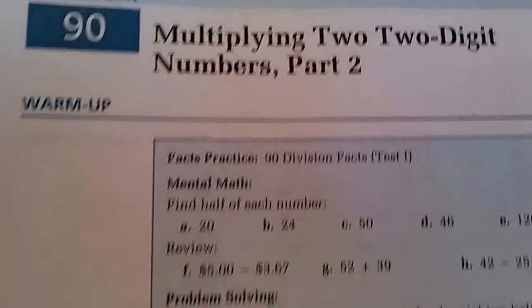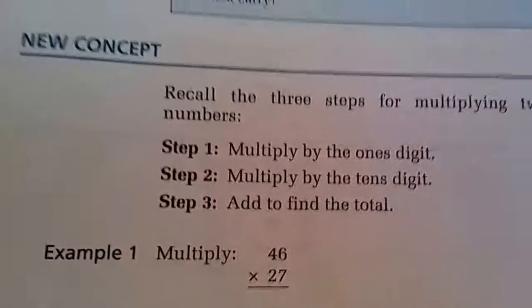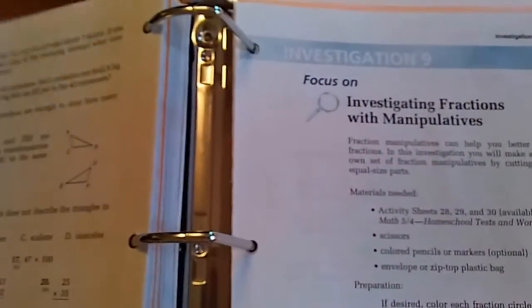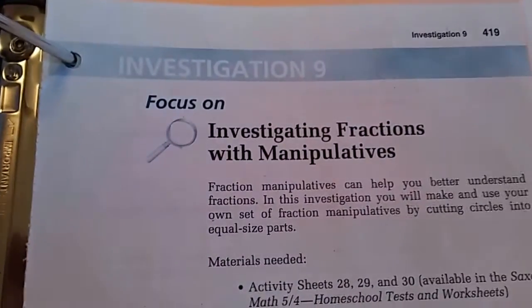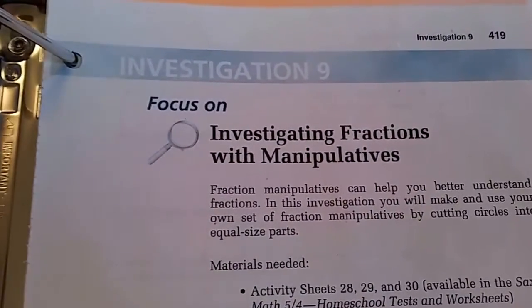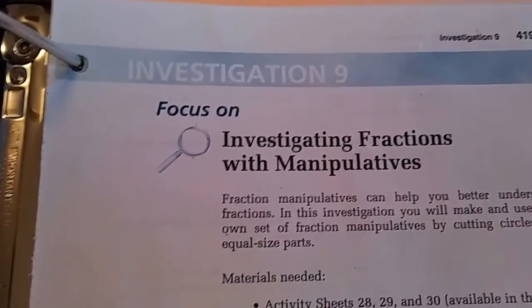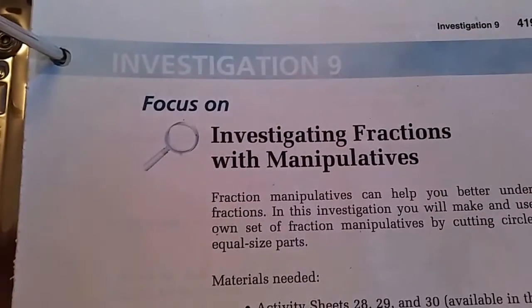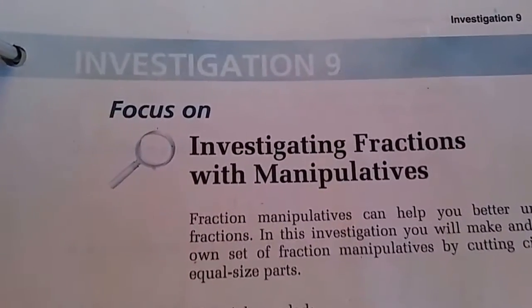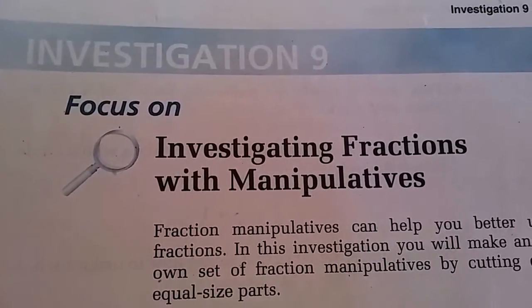So we went on to lesson 90, multiplying two two-digit numbers. She already knows how to do that, so we got to skip again. We've been very behind in this book, it's been taking us forever to get through, but because I utilize other resources besides just our Saxon Math, she had already learned those. We were able to skip all of those chapters. We were working today on investigation number 9, investigating fractions with manipulatives.